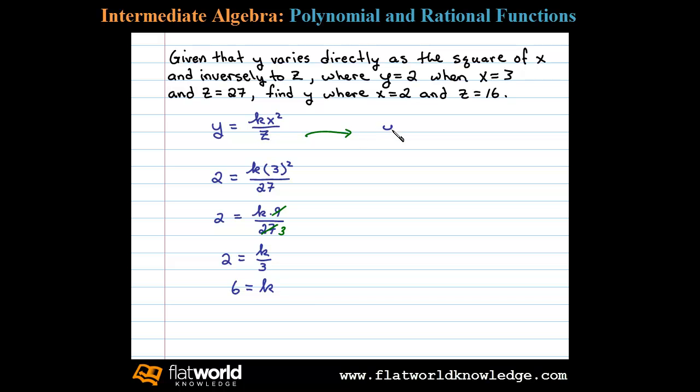So we'll use this to model the problem. We have y equals 6 times x squared over z. Now we'll use this equation to actually answer the question. The question is to find y where x is 2 and z is 16.